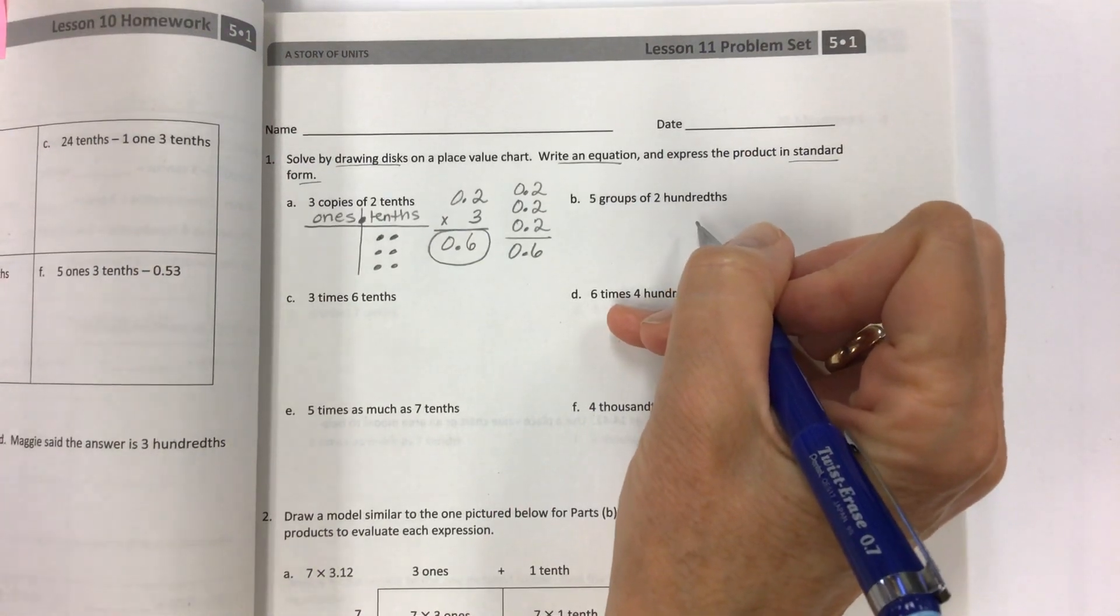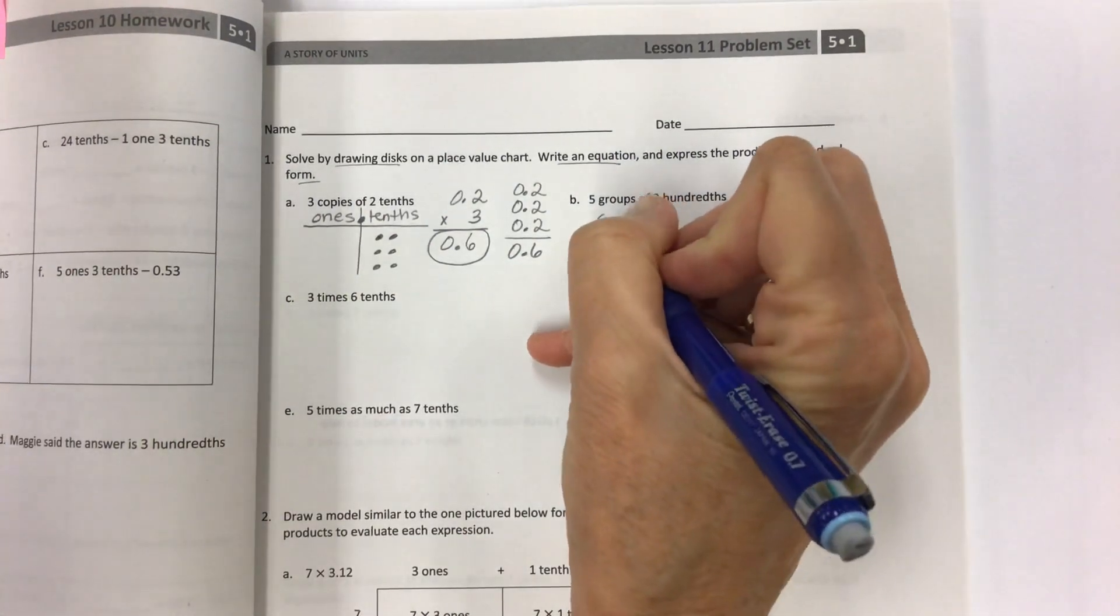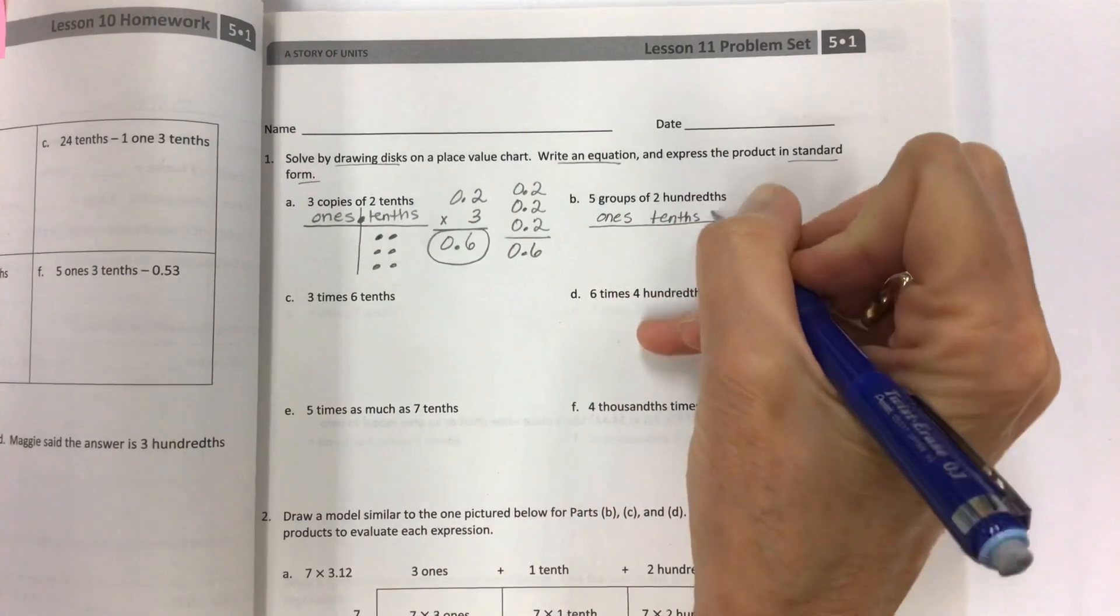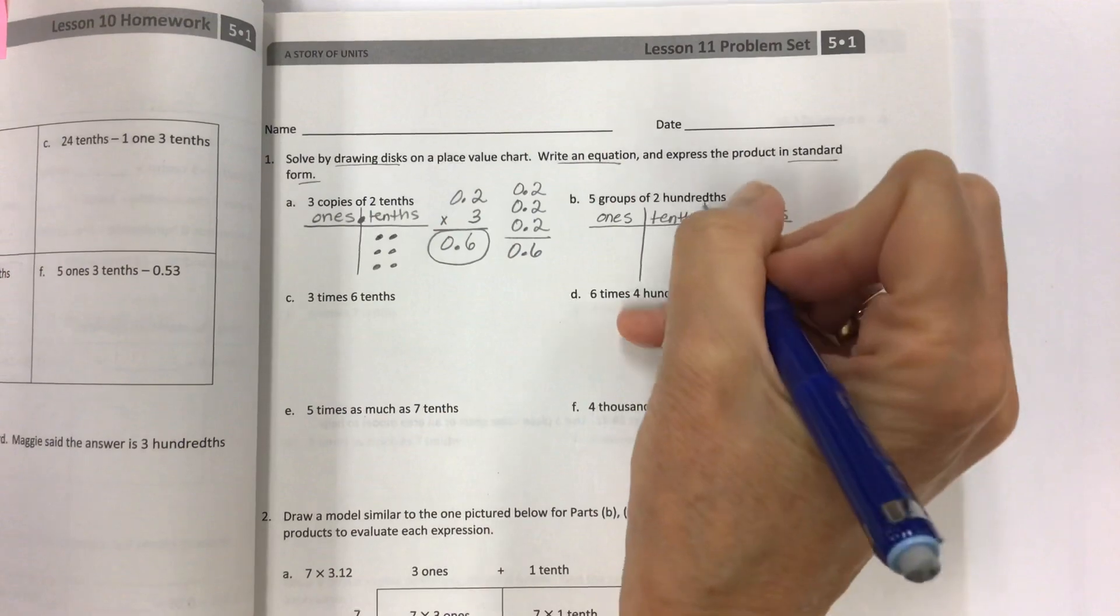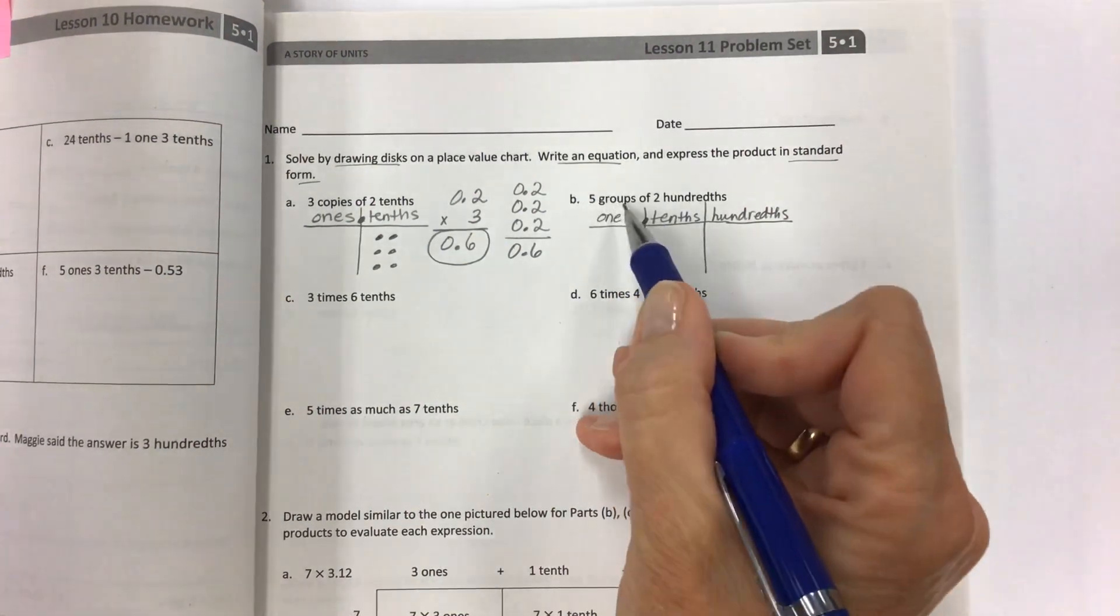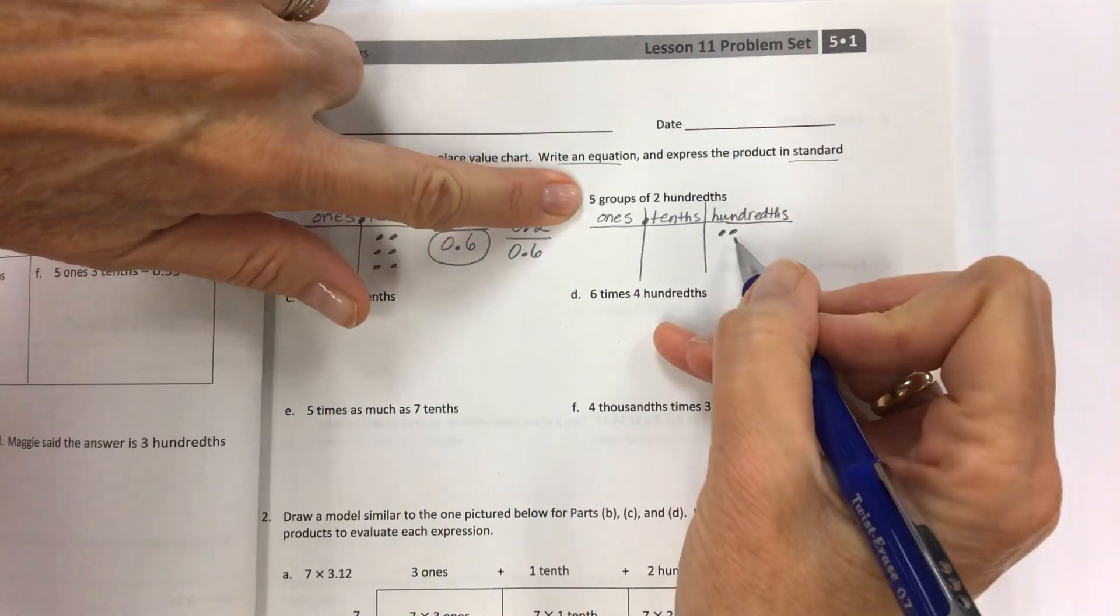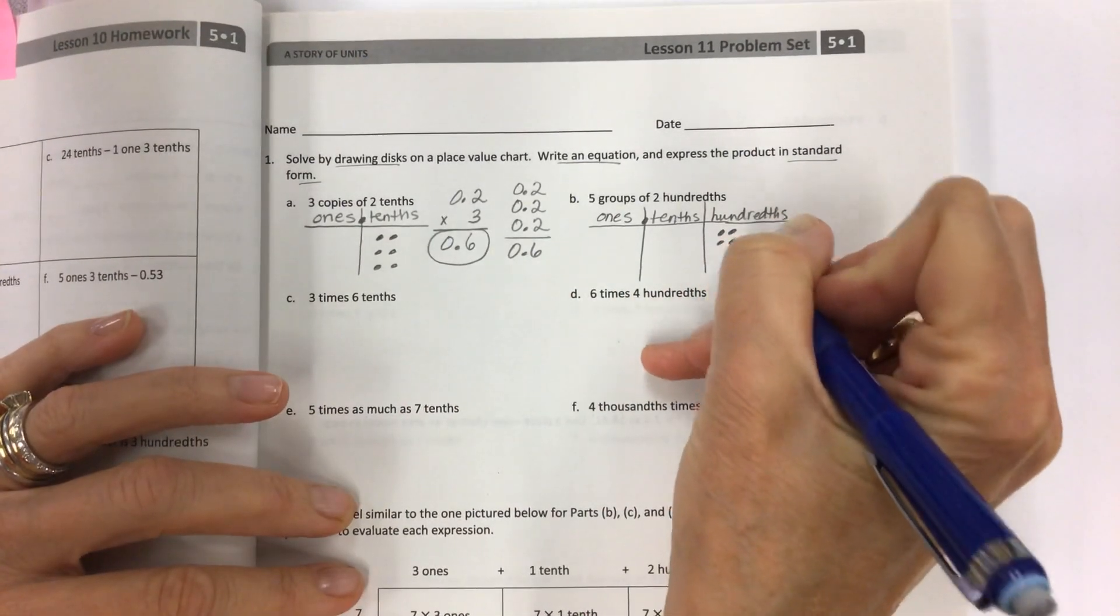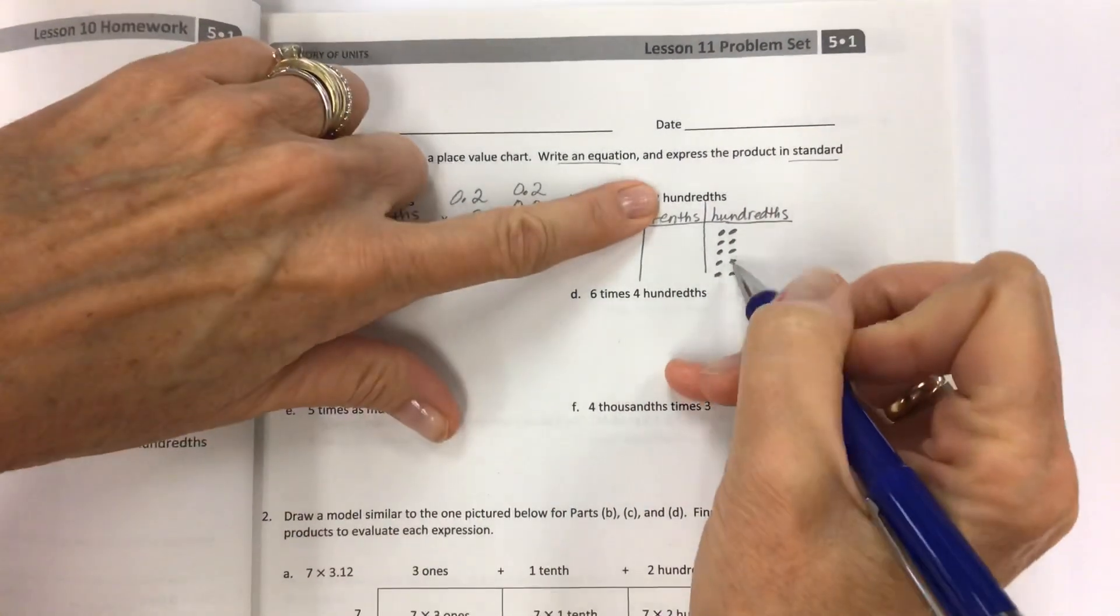So five groups of two hundredths. Now this time I don't really need anything else, but I am going to write the ones place because I want to have a zero there and then I'm going to have the tenths and the hundredths. Remember we can always switch to fraction form if it gets too cumbersome. Put your decimal down between ones and tenths. Now I have five groups of two hundredths. So if I have two hundredths and I have this five times, it's just another way of saying I have these copies. I'm repeating it. So this is the second, two, three, four, five.